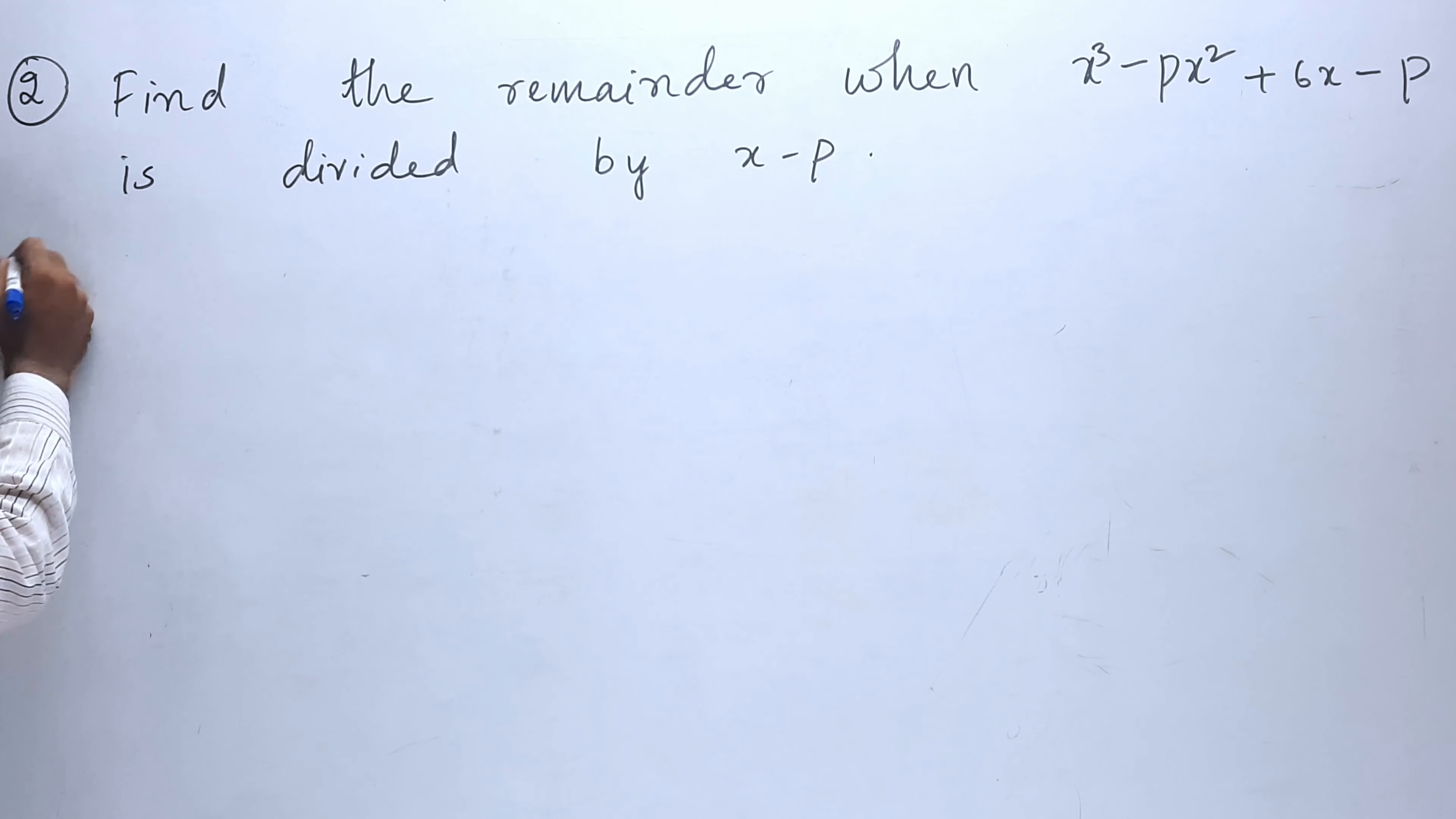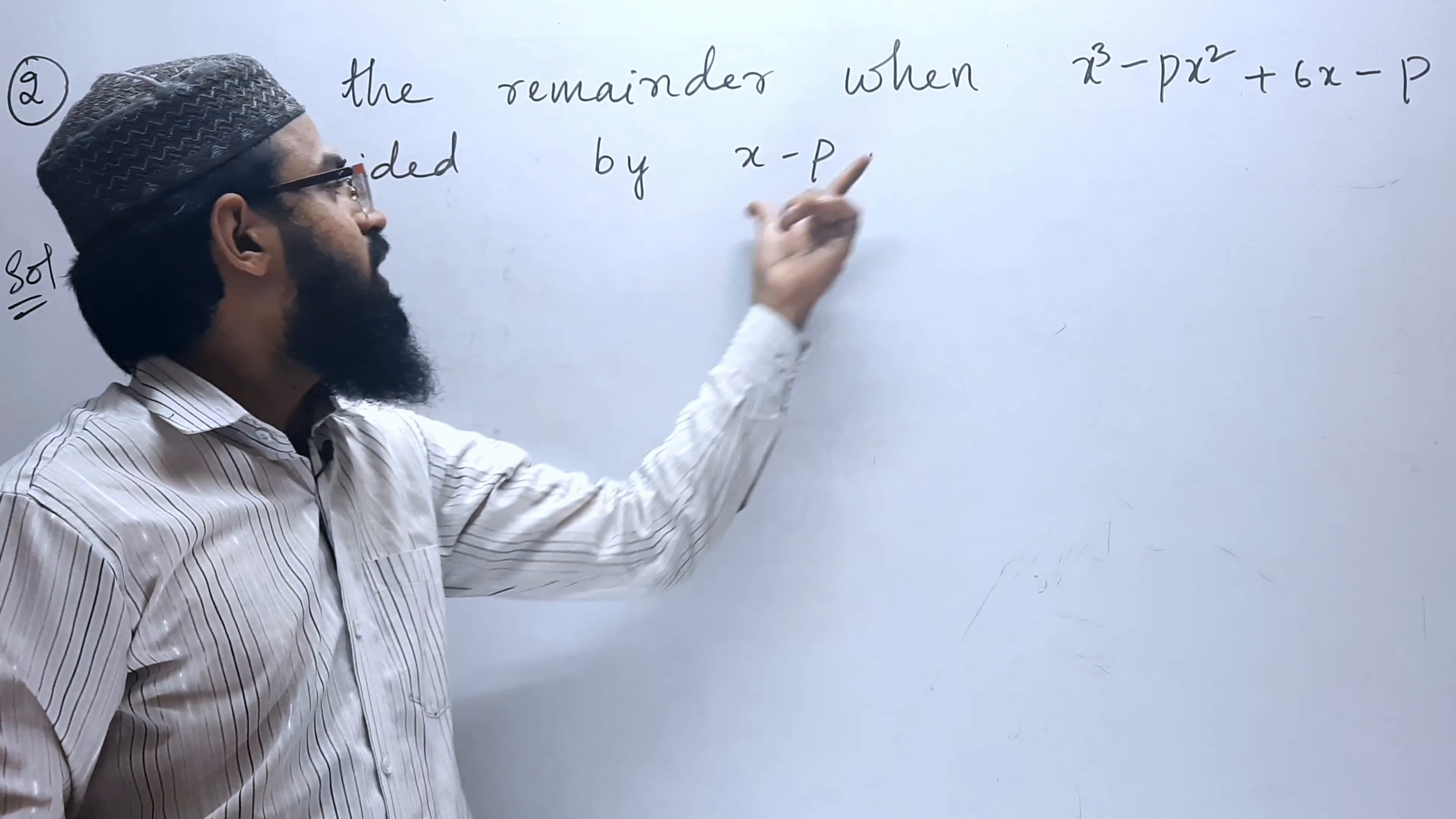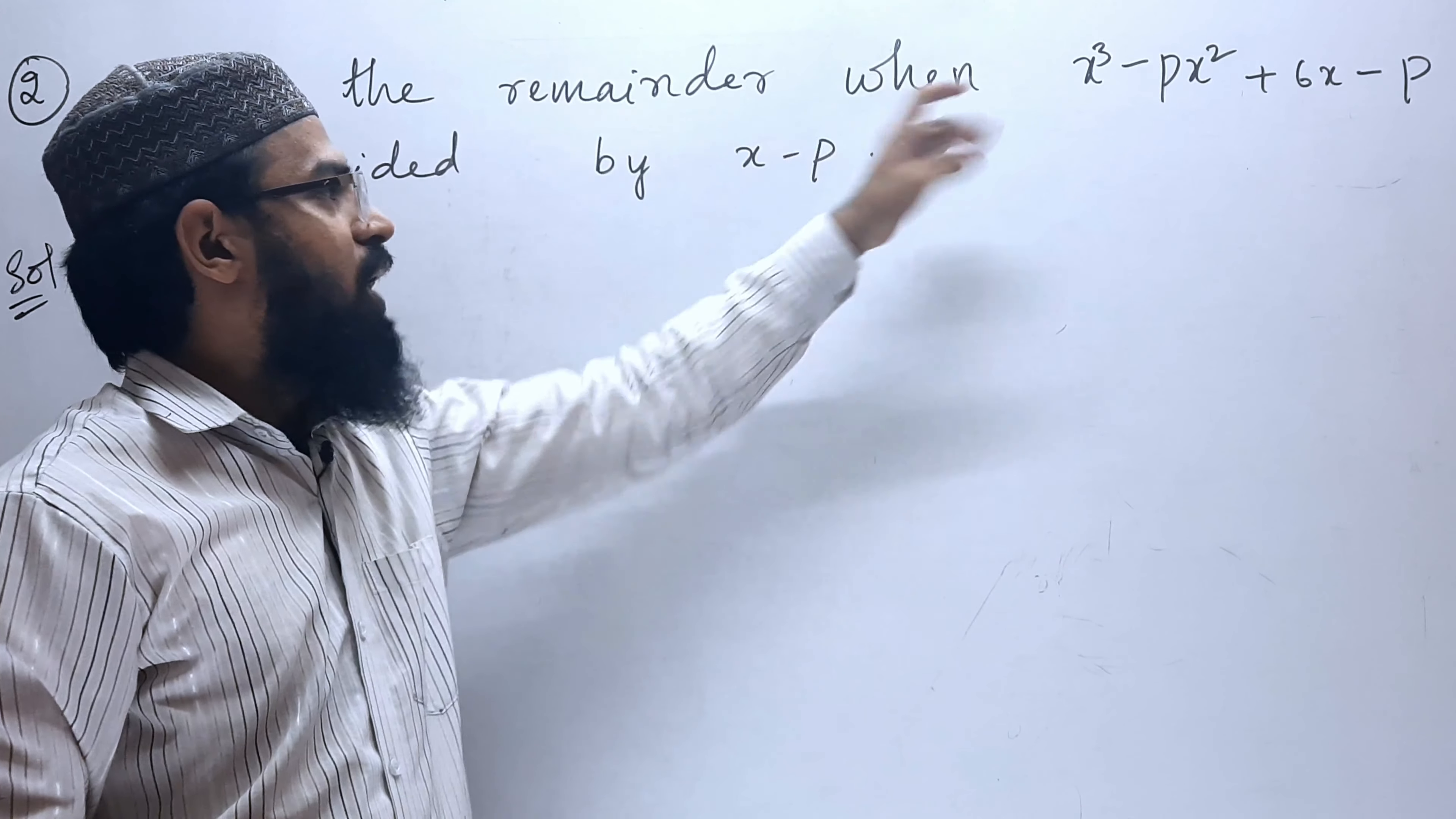So, let us write the solution. What is given? We have to divide this polynomial with x minus p.